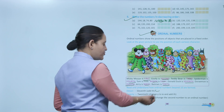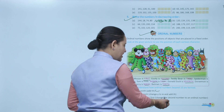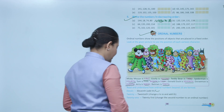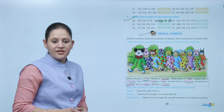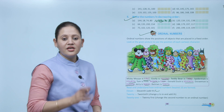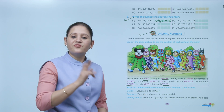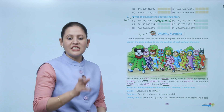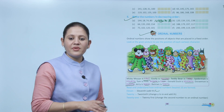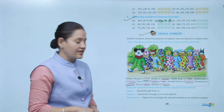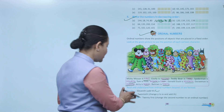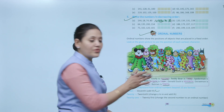Change 'y' to 'ie' and add 'th' for numbers like twenty. To change to an ordinal number: 21st — twenty-first.